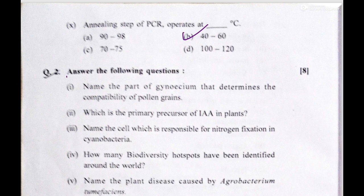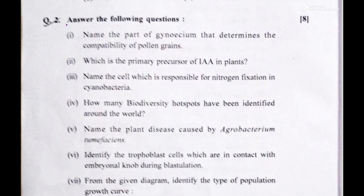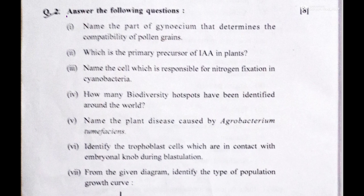Now we'll see the answer the following questions section. The first one: name the part of the gynoecium that determines the compatibility of pollen grain. Its answer is the pistil — specifically the stigma of the pistil — which is the part where the pollen grain germinates.